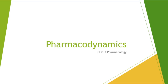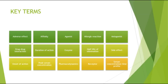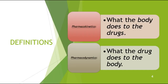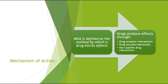This next lecture will be on pharmacodynamics, which is chapter four in your book. You have key terms — make sure you're able to define these terms. Pharmacokinetics is what the body does to the drug, whereas pharmacodynamics is what the drug does to the body. Make sure you know the difference between the two.